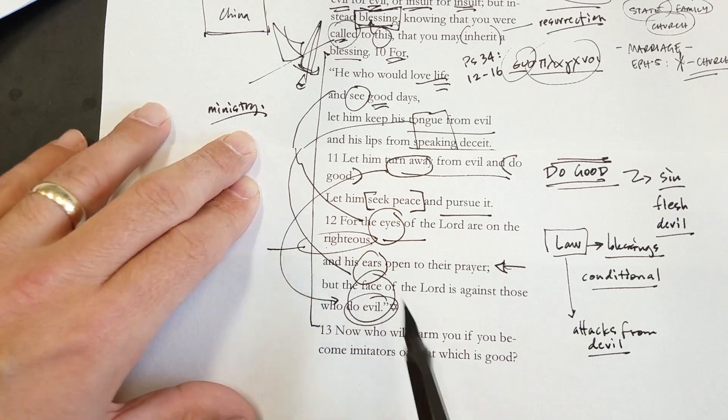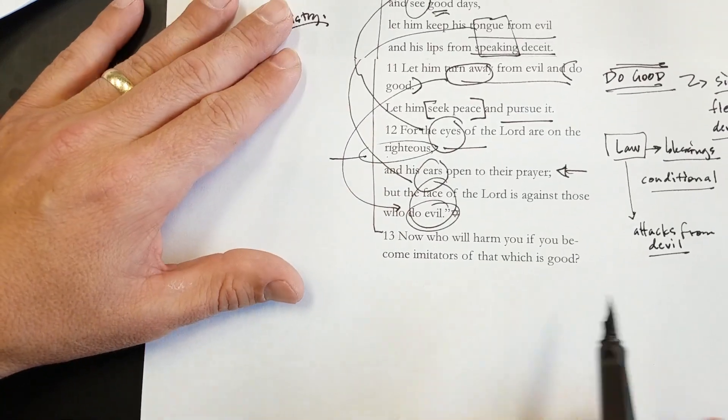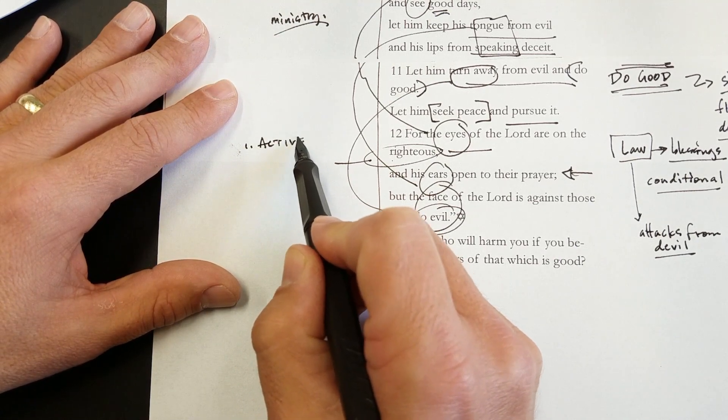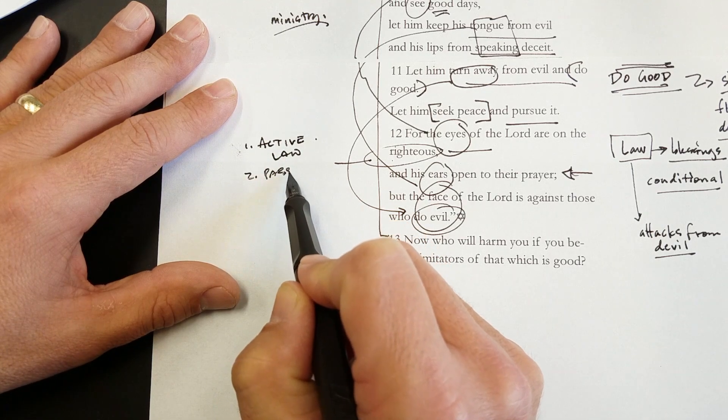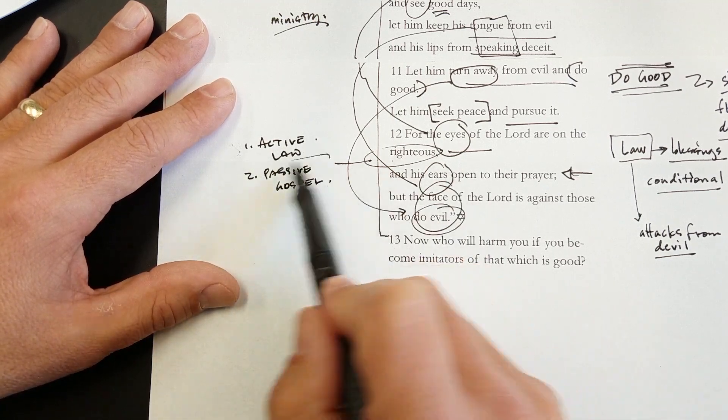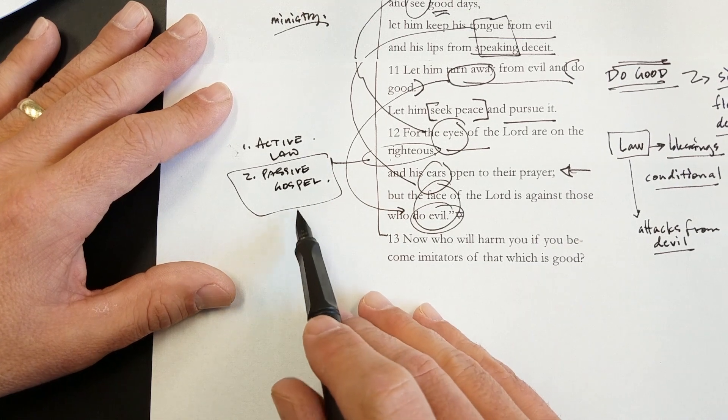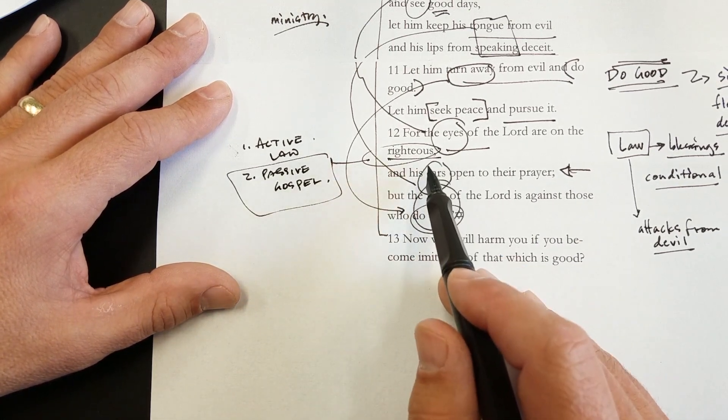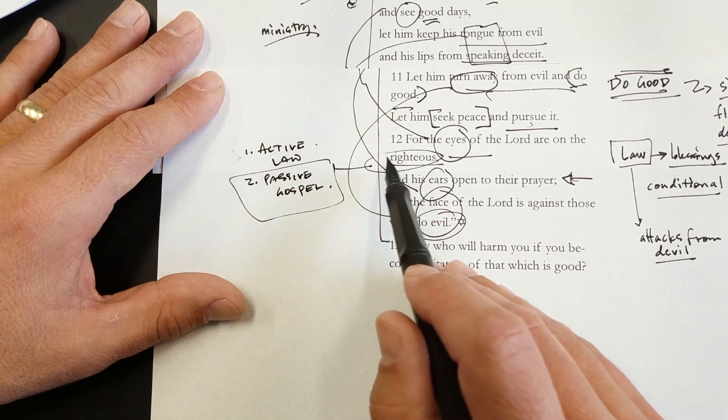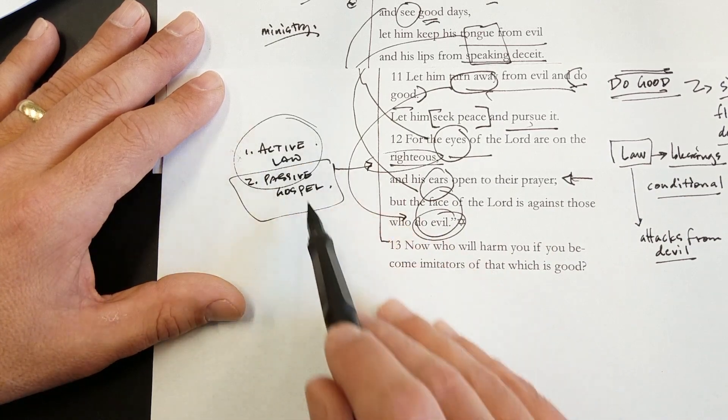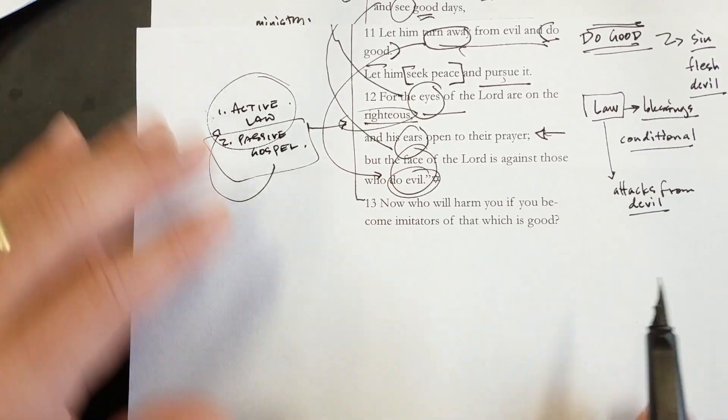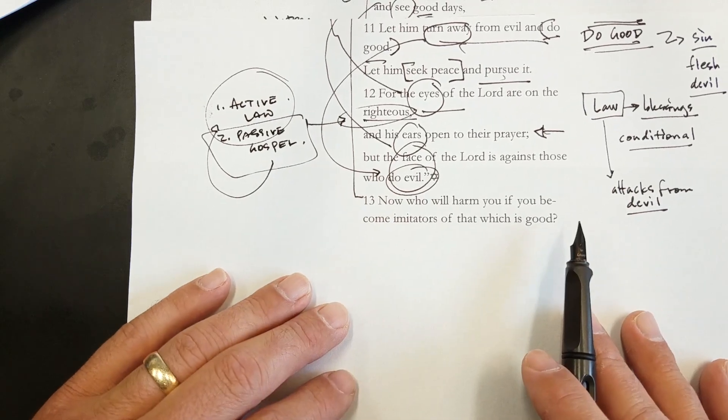Now, remember, one final thing here before we get to the last verse. Whenever we see the word righteous, we remember that there's two types of righteousness. There is the active righteousness that comes from the law, and there is the passive righteousness that comes from the gospel. And which righteousness is it? We want to lean always towards the passive righteousness of the gospel and assume that whenever we see the word righteousness, let's see if that fits first. In this case, it doesn't quite fit because it's talking about doing good, etc. So, this is probably the active righteousness of the law. But we remember that when the Lord calls us righteous, he, in fact, gives us his spirit so that we begin to do these things, to seek peace and pursue it. We actually do it.